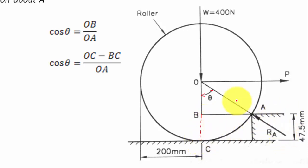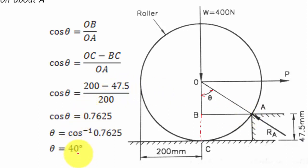OC is 200, the radius of the roller, and BC is 47.5, and then OA is again radius of the roller, 200 millimeters. Let us put in all these values and theta shall finally work out as 40.3, but I am rounding it off to zero decimal places and have taken it as 40 degrees.